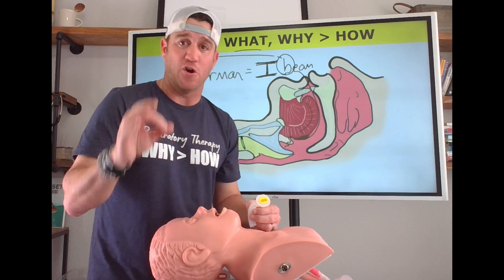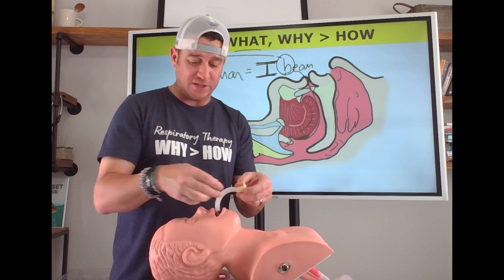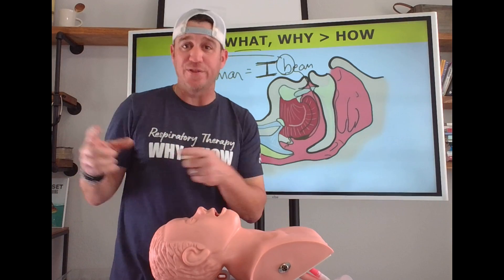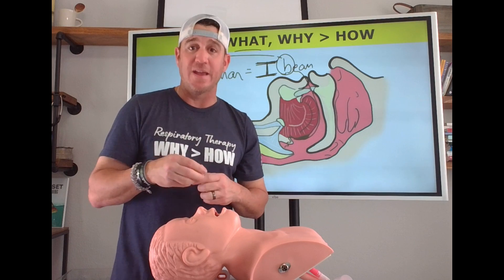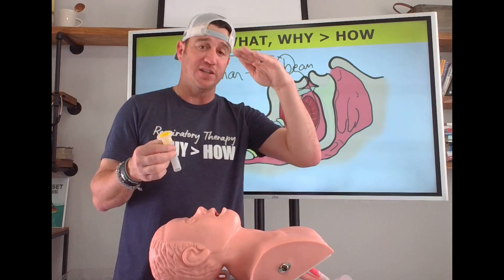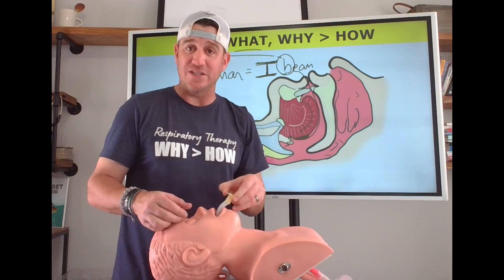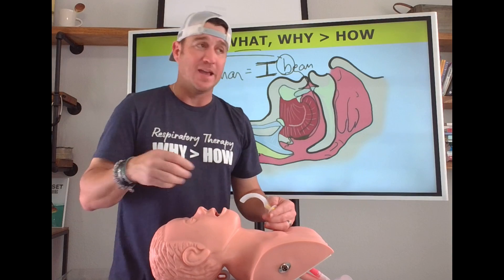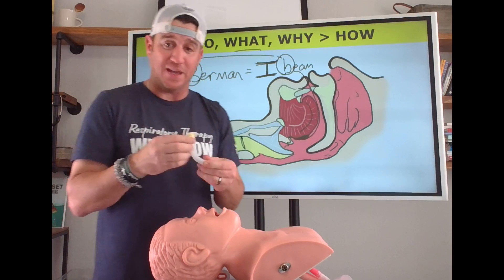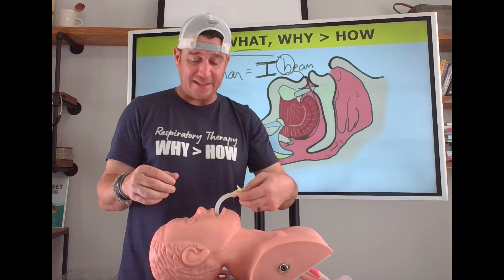When it comes to inserting the OPA, there are two techniques. You have to be aware that when we insert this, we don't want to push the tongue back further. On page 802 in Egan's 12th edition, it talks about two different ways to insert an oropharyngeal airway. One is to use a tongue depressor to depress the tongue, pulling it forward and down, then slide the OPA into the patient's airway.